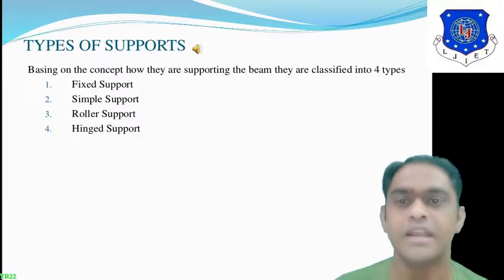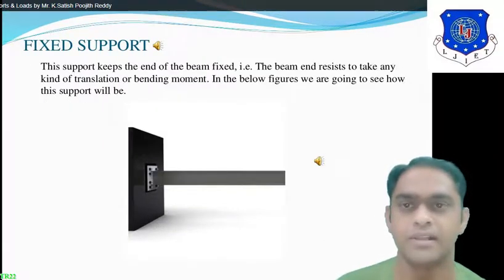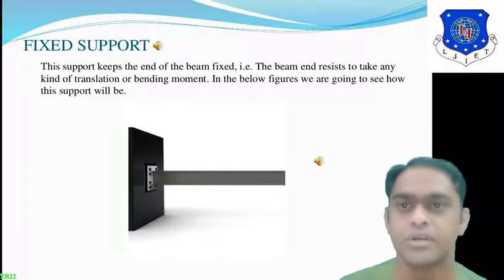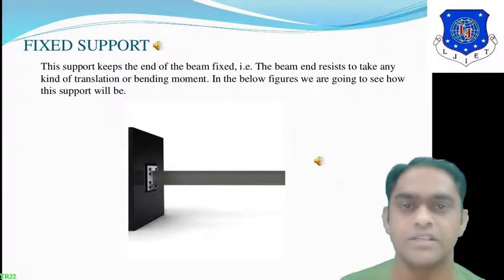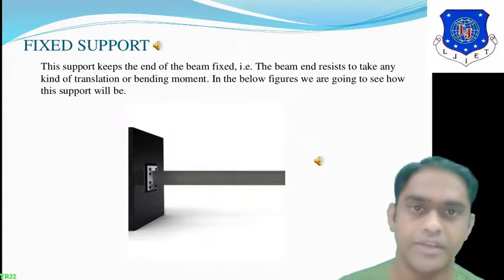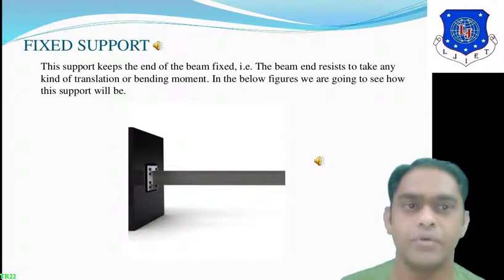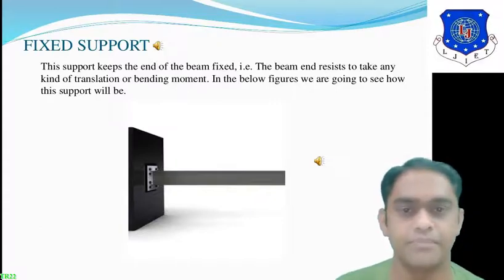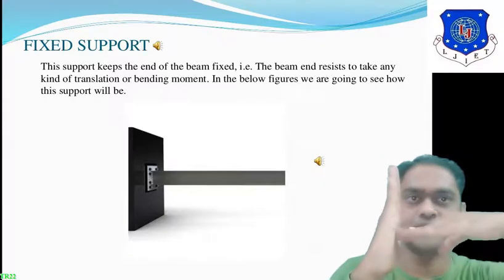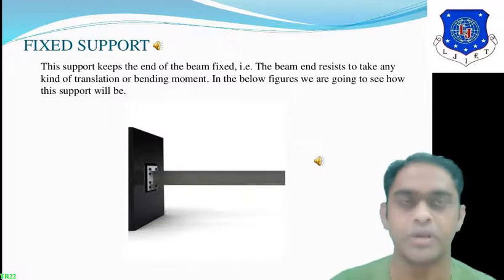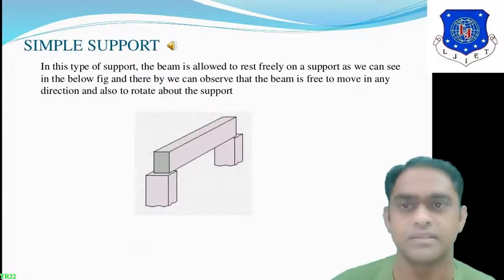There are mainly four types of supports: fixed support, simple support, roller support, and hinge support. Fixed support keeps the end of the beam fixed. As you can see in the figure, one end or both ends of the beam can be fixed. The beam ends resist any kind of translation or bending moment. In the figure, the horizontal beam is fixed at one end so that the support resists the beam from bending clockwise. The beam can also be fixed from both ends.